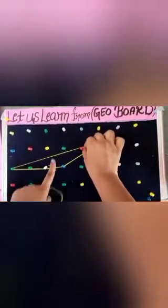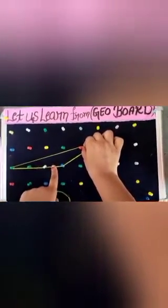Now we will discuss about the types of triangle. This is our right angle triangle, as one angle is of 90 degrees. This is our obtuse angle triangle, because one angle is more than 90 degrees. And this is our acute angle triangle, because all angles are acute angles.